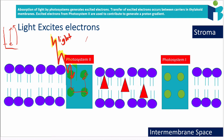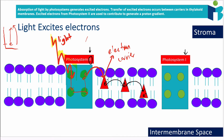The absorption of light by photosystems generates excited electrons. These electrons are then passed onto an electron carrier — something that carries electrons — and from there the electrons get passed down an electron transport chain, from one electron carrier to the next. This process of transferring is similar to the electron transport chain in the mitochondria. The electrons are passed from photosystem 2 to photosystem 1 using these electron carriers. Photosystem 2 was actually discovered second — photosystem 1 was found first, hence the naming.